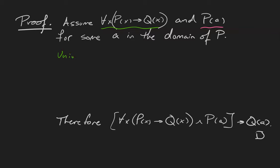Well, universal instantiation says that if P(x) then Q(x) is true for all x, then it must be true for a.